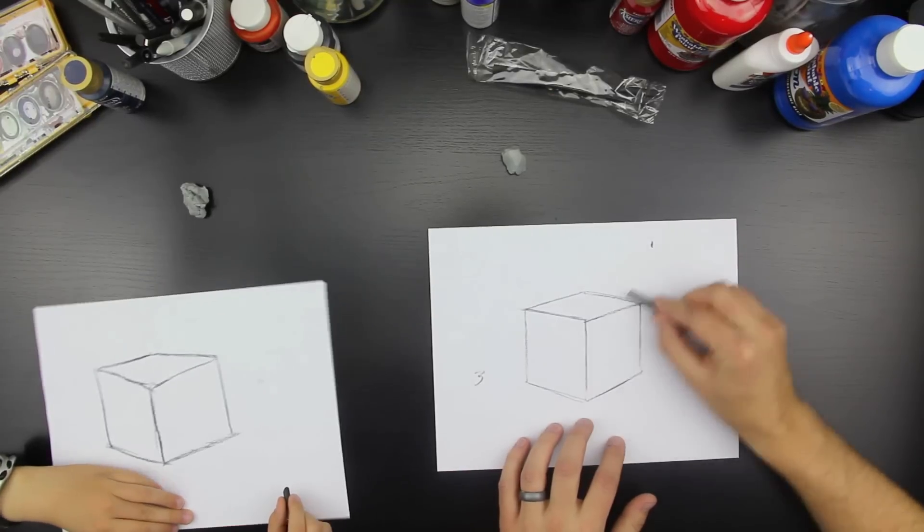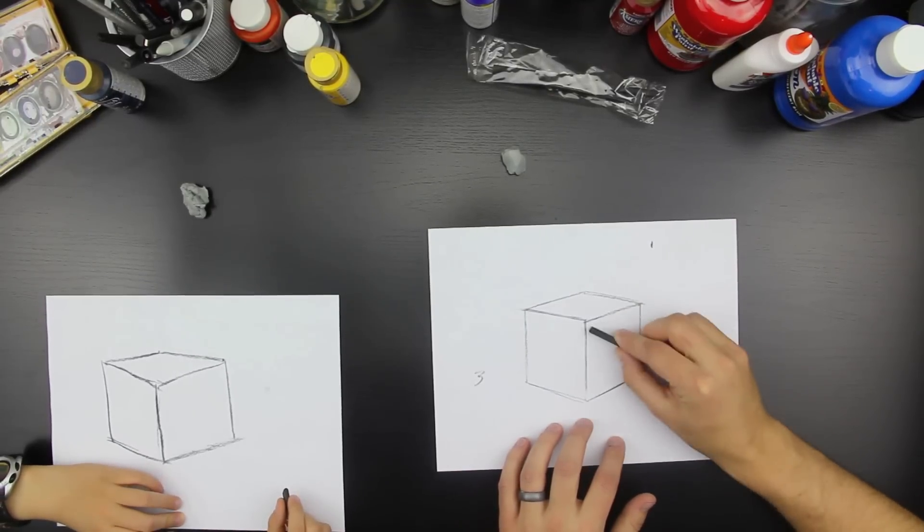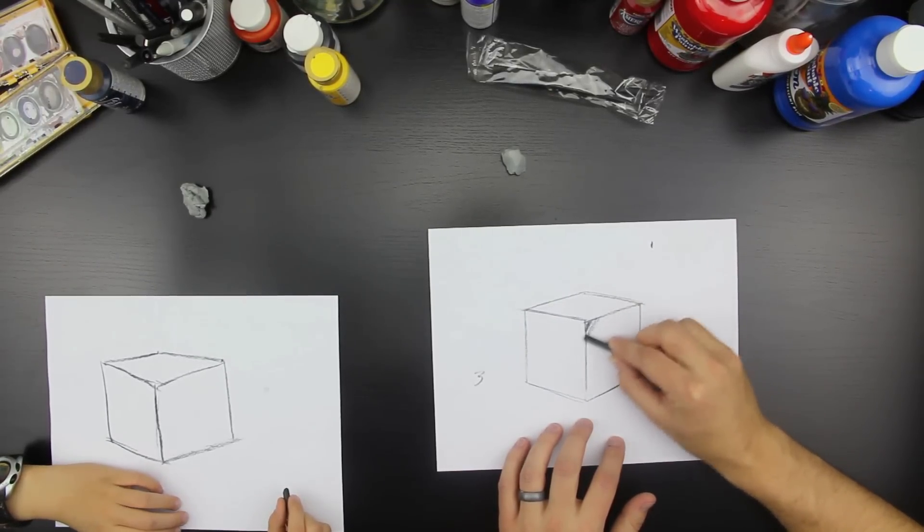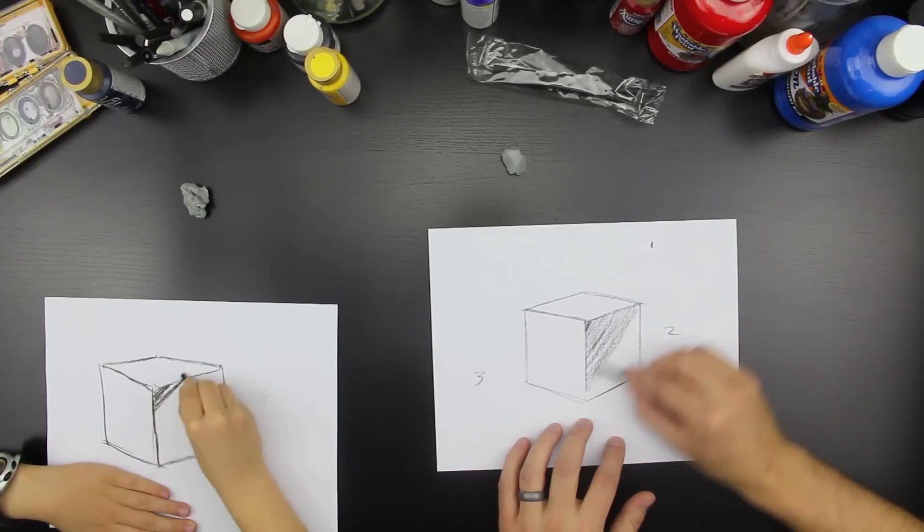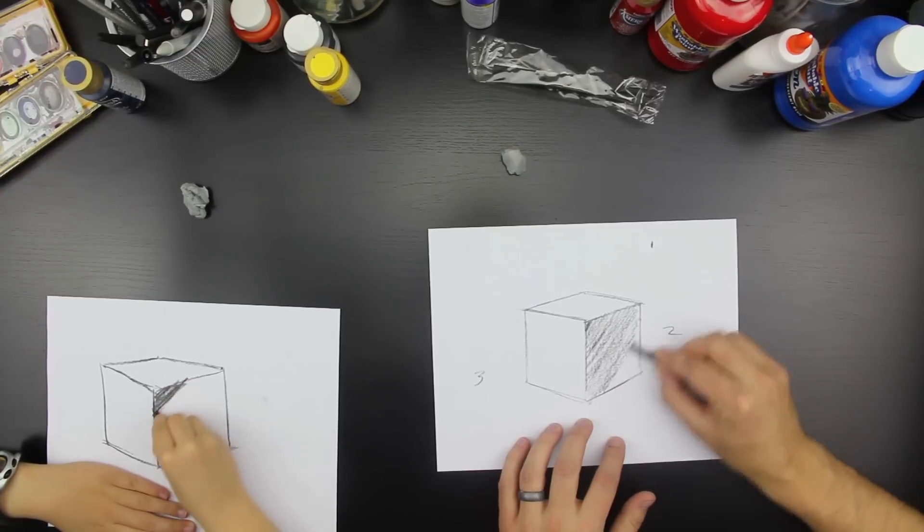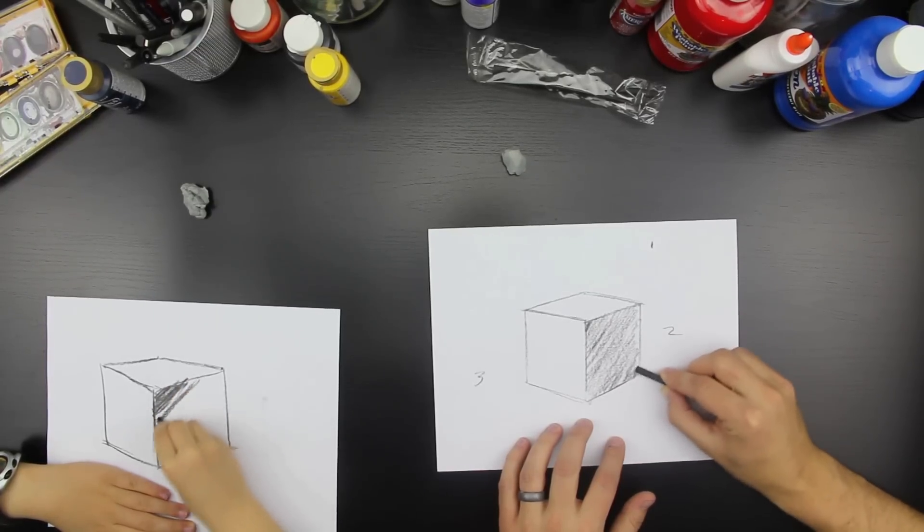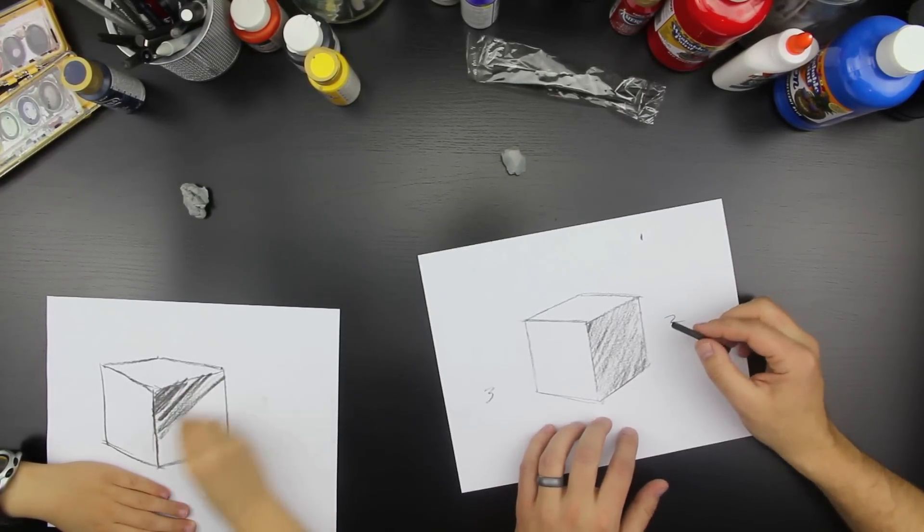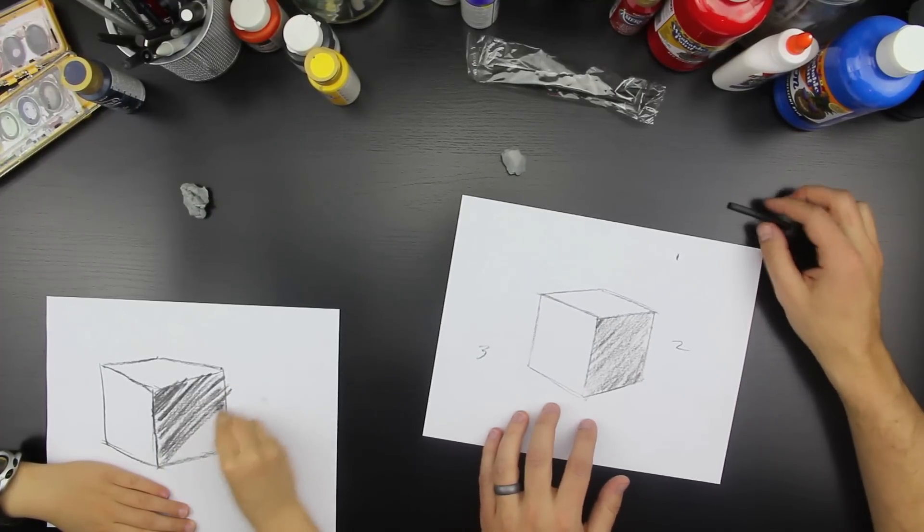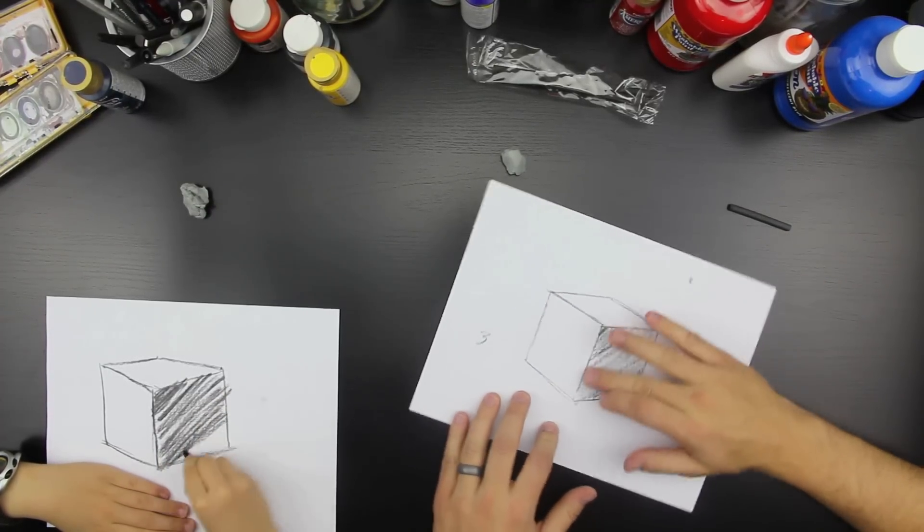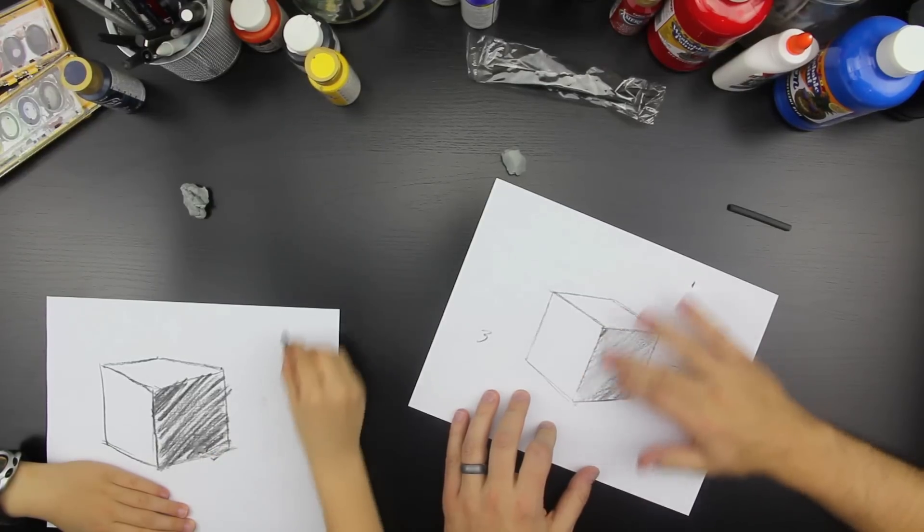So first thing, we're just gonna do a bunch of lines that are in the same direction. Try and make it look gray, not black, just gray. Do a little lighter. And then once you're done filling it in, use your finger and smooth it out.